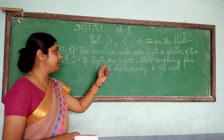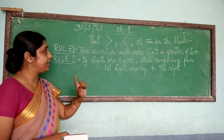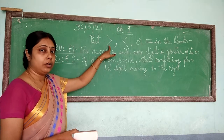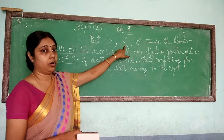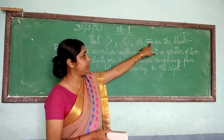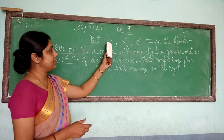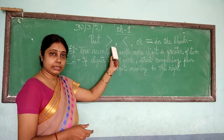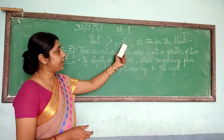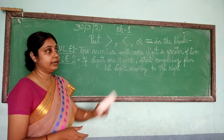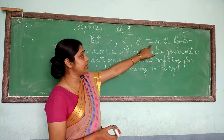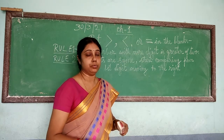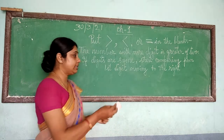I want to discuss a few rules related to this. Before that, can you tell me what sign is this? What do we call this sign, or what is the name of this sign? It is known as greater than. This sign is known as less than. And this one is equal to.